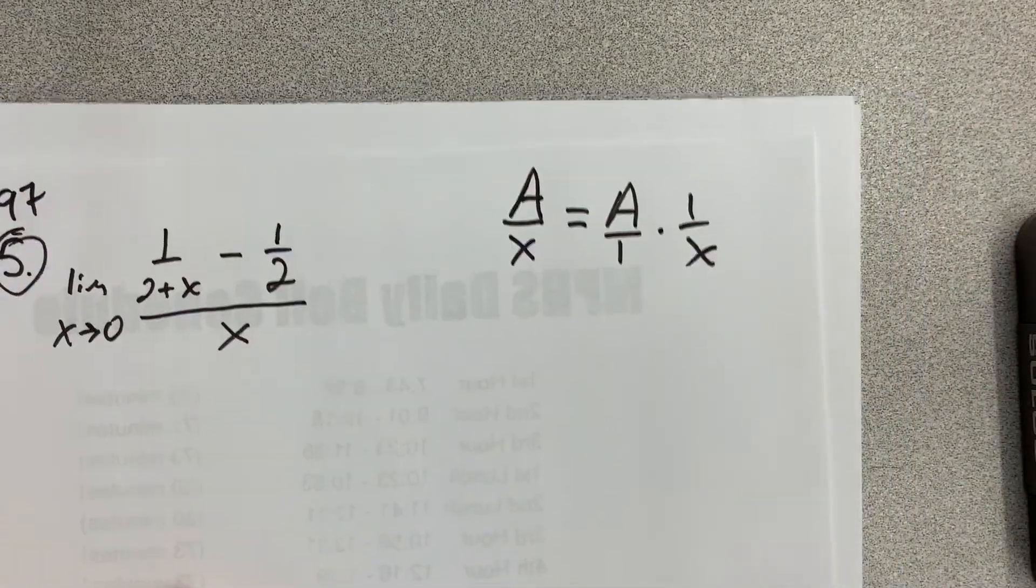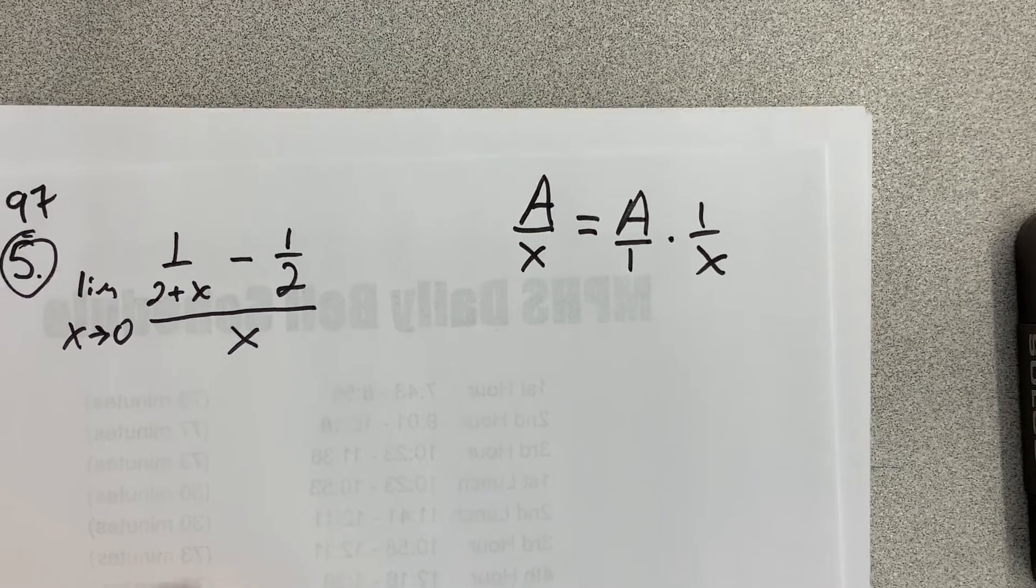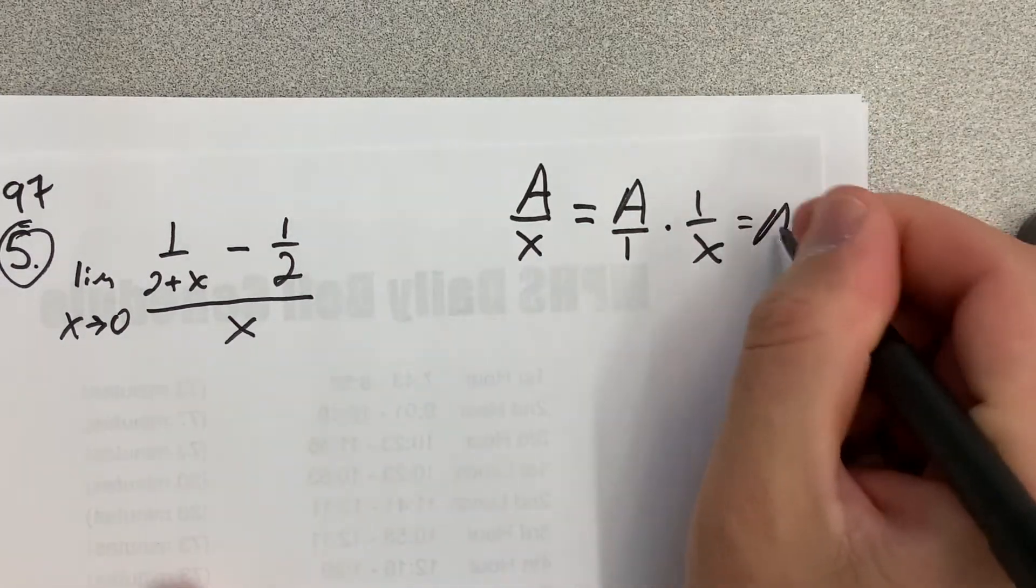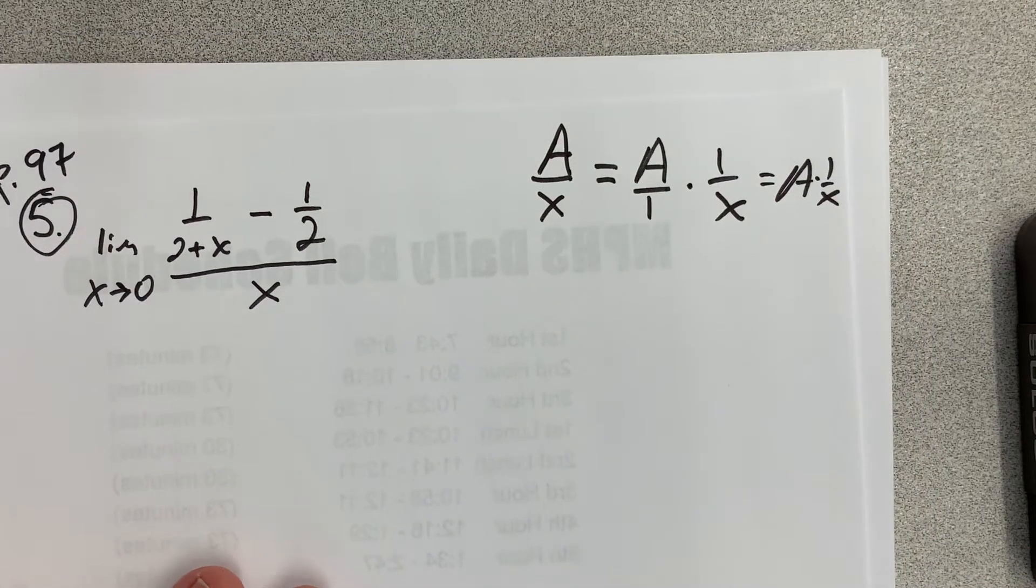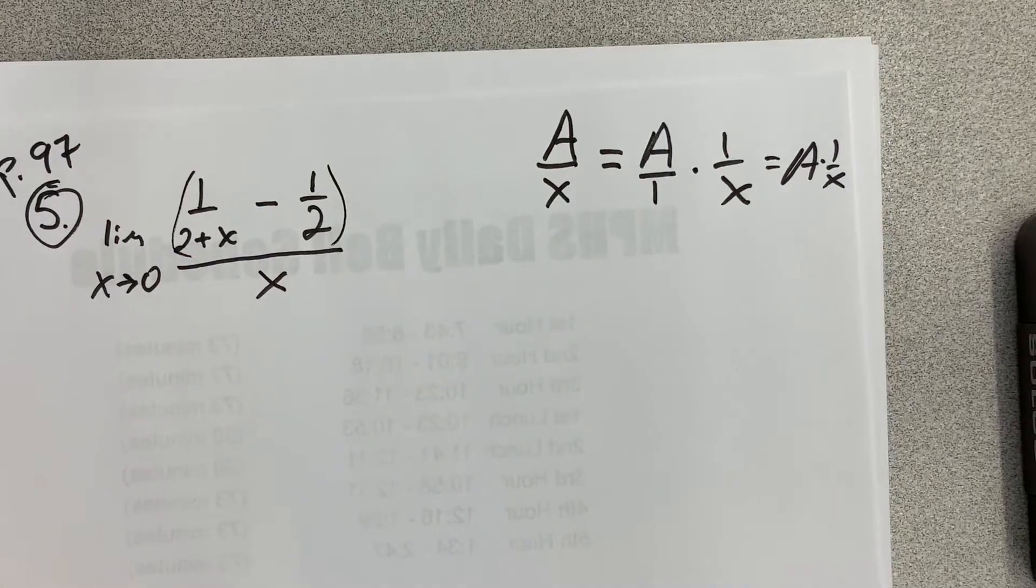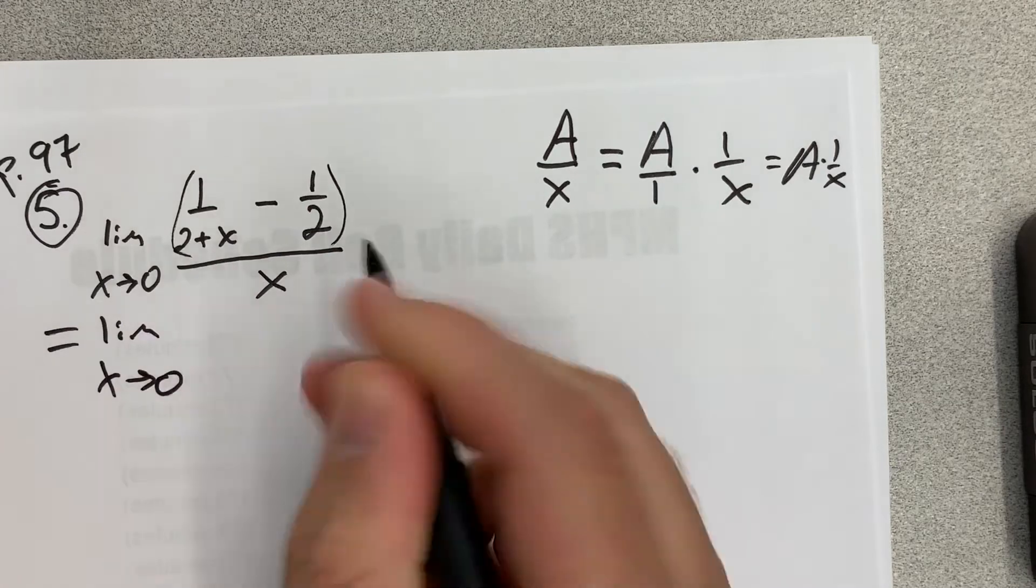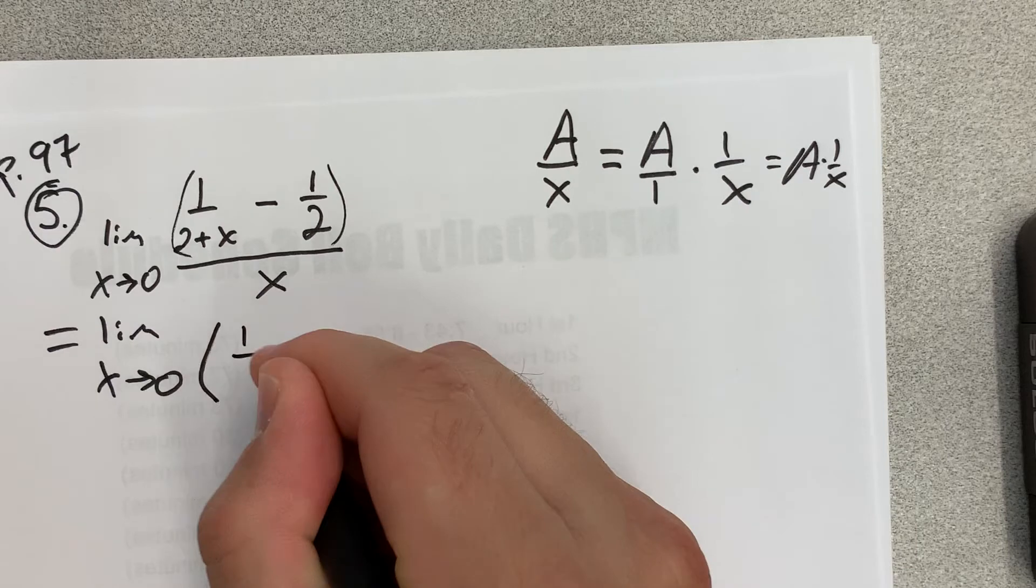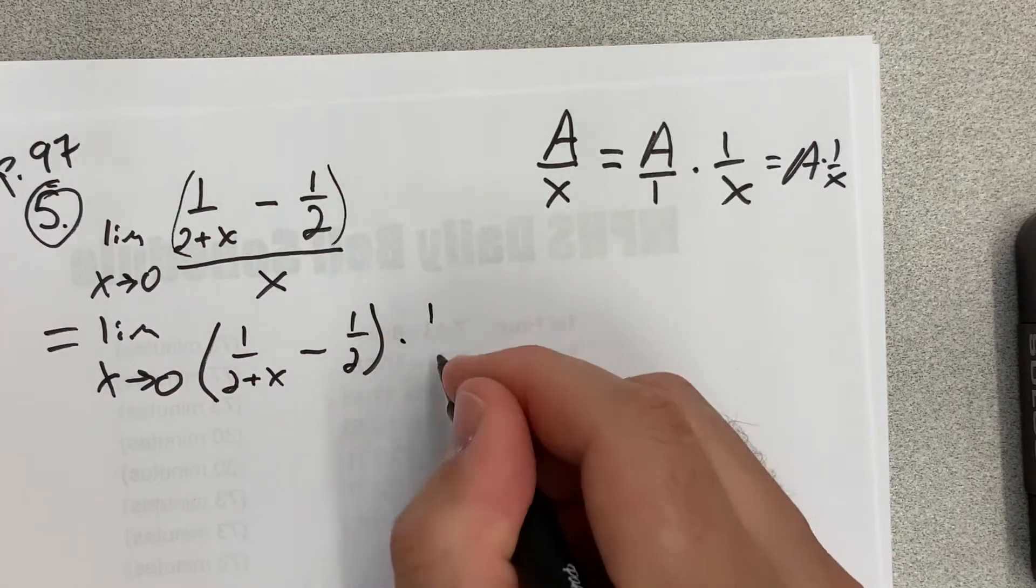That seems fine. That's like un-multiplying the fractions, right? And then I can just write that as A times 1 over x. So I'm going to do that. This is my A right here. So what I'll have is the limit as x approaches 0 of 1 over 2 plus x minus 1 half times 1 over x.